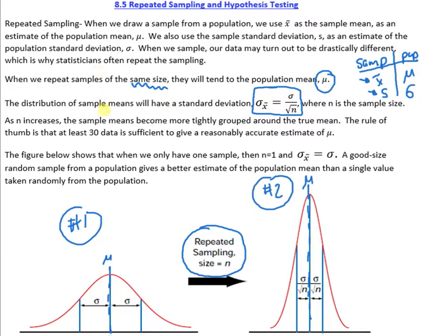And the rule of thumb is that at least 30 data is sufficient to give a reasonably accurate estimate of mu. Now I just want to point this out.